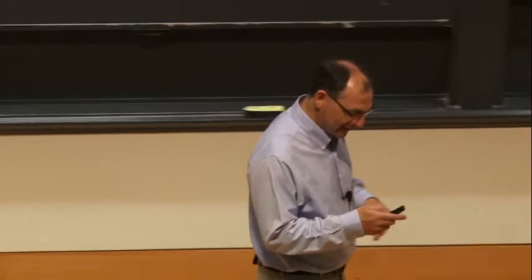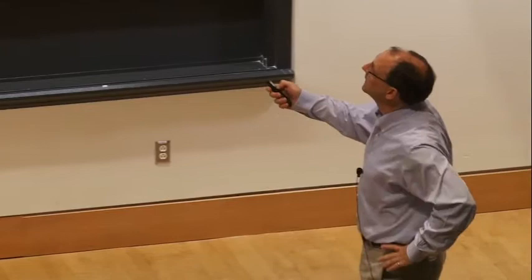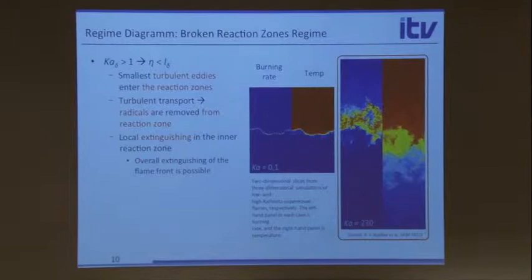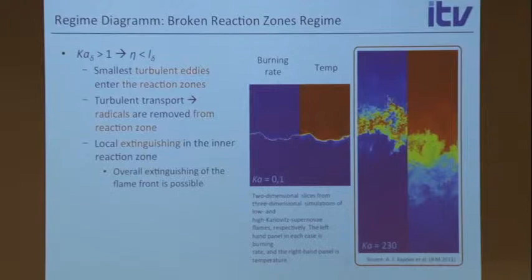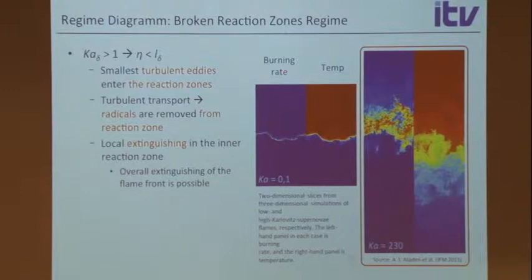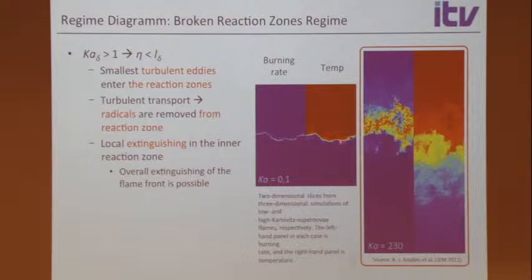This is an example from DNS by Aspden and Bell at Lawrence Berkeley Lab. At low Karlovitz number, you get a thin flame sheet — this matches what we saw in the experiment. At very large Karlovitz number, you don't see a thin flame sheet anymore; things are more distributed, which is why it's sometimes called the distributed reaction zone regime.